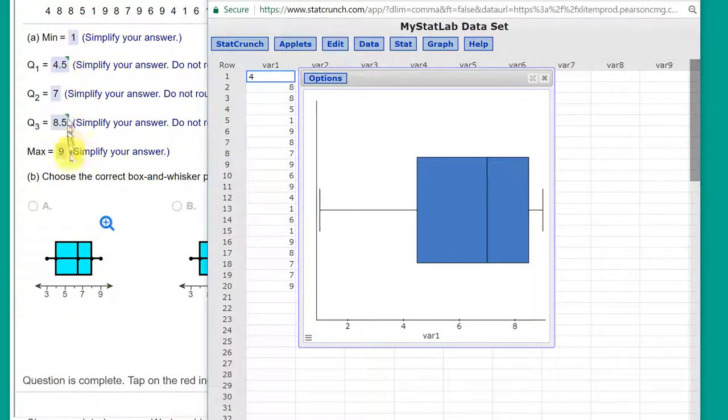But to get our five-number summary, instead of the descriptors, all you've got to do is hover over the box plot.